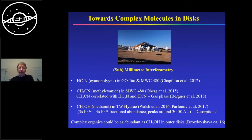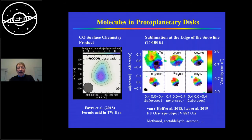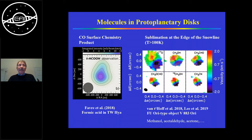Using our knowledge of chemistry in these disks, we expect the presence of organics in the outer disk regions. I show two examples: on the left, a disk around the young star TW Hydra — the most nearby young star — showing emission from formic acid. On the right is an interesting natural experiment: at the sublimation front at the edge of the snow line, material comes off from the grains; heating it up in an outbursting FU Ori-type object reveals methanol, acetaldehyde, acetone, and other molecules. All that material sits at lower temperatures on grain surfaces and can lead to more complex species.